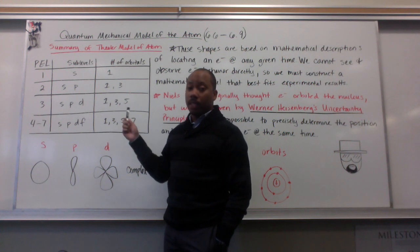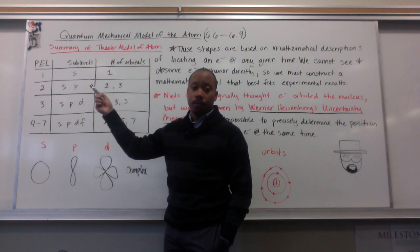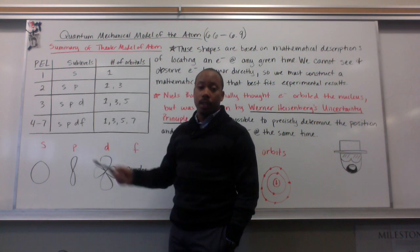Two electrons apiece for each orbital. So you can count how many electrons can fit in an energy level of one, two, three, and four through seven.